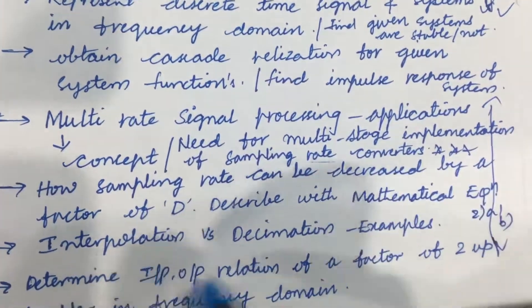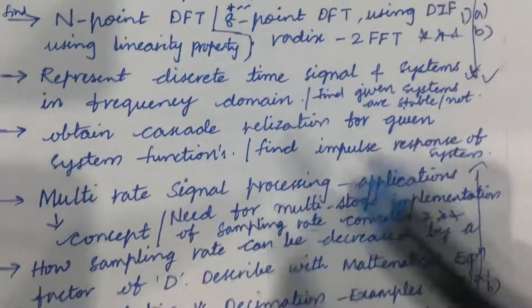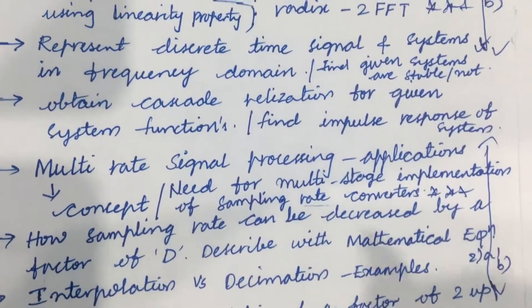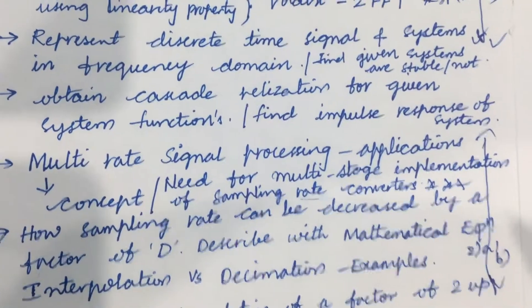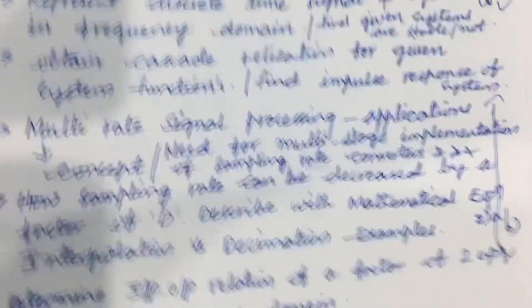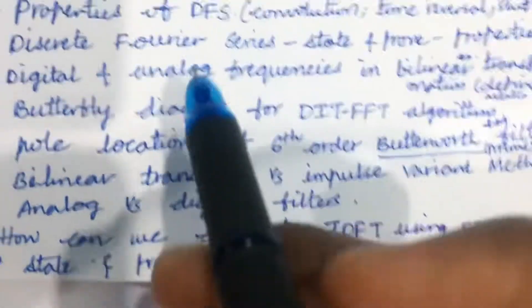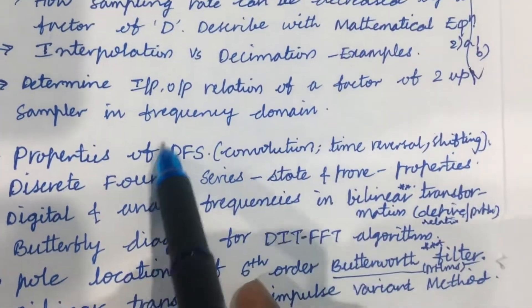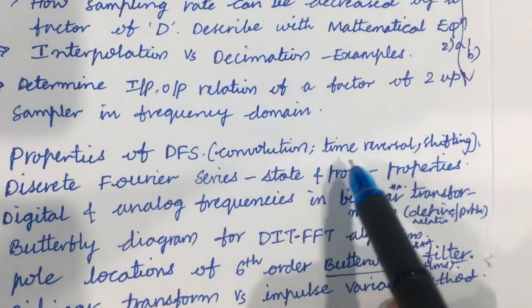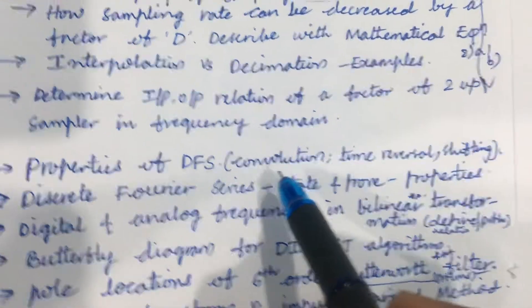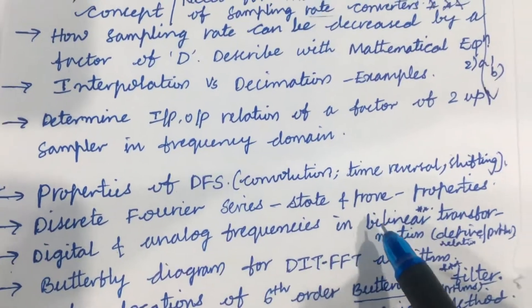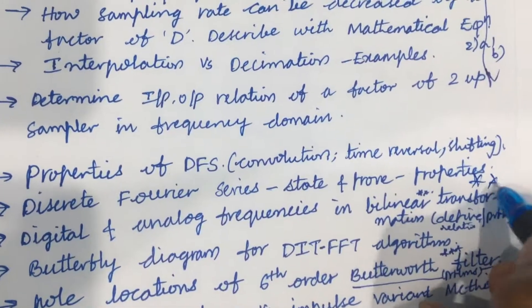In order to pass, as unit one is too lengthy in its structure, you are supposed to work out all these things without skipping any part to score 30 marks. As per the COVID exam pattern, eight questions will be asked, of which you are supposed to answer any five. Look at the third and fourth questions — properties of DFS including time reversal, time shifting, and convolution, as well as discrete Fourier series — state and prove the properties, which is a gunshot question for this time.